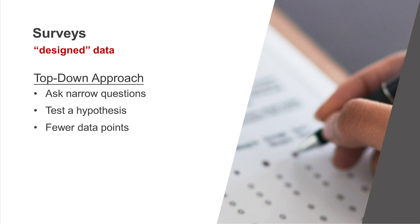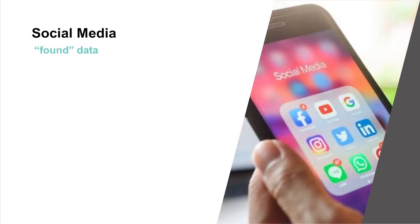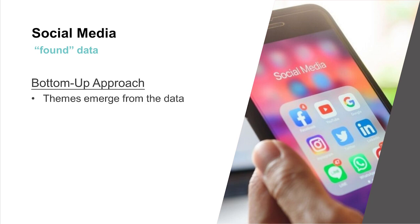Returning to our dispute between Alpha and Beta, here's an example of a survey conclusion that supports the hypothesis that Beta has been harmed. Here we see that a significant number of respondents would be less likely to purchase Beta soup if it contained MSG. Turning back now to social media. As found data, the analysis often follows a bottom-up approach. A bottom-up approach is a data-driven effort wherein a researcher identifies themes and phenomena that emerge from the found data. Let's look now at an example of a bottom-up social media analysis.